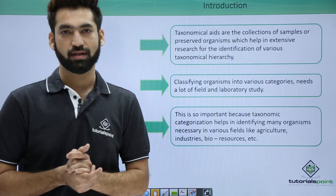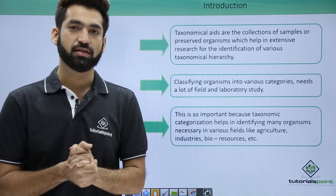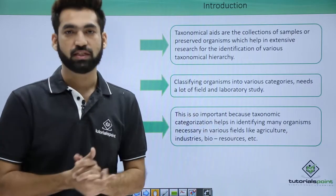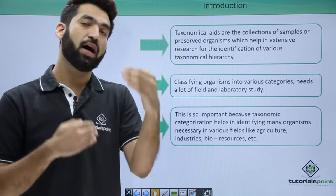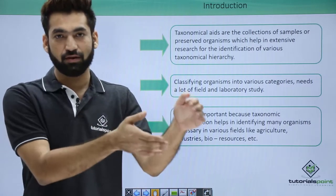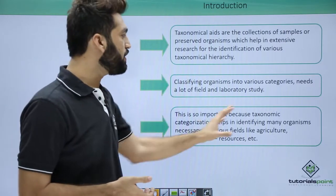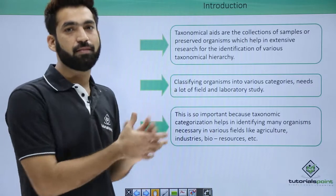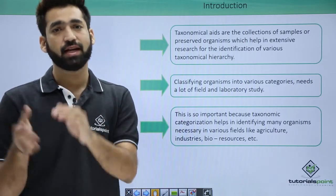Taxonomic aids are tools that help you identify a particular organism. For example, if you want to identify which family a particular organism belongs to, what its genus is, and what other organisms share similar characters to the specimen you are examining, taxonomic aids will give you all of that information.